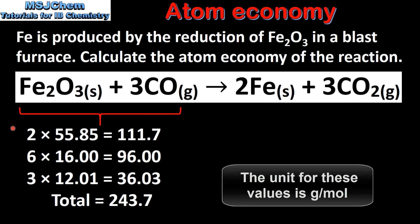We'll start by finding the total of all the molar masses of the atoms in the reactants. We have 2 atoms of iron, so that's 2 multiplied by 55.85. We have 6 atoms of oxygen, so that's 6 multiplied by 16.00. And we have 3 carbon atoms, so that's 3 multiplied by 12.01. When we add these together we get a total of 243.7.